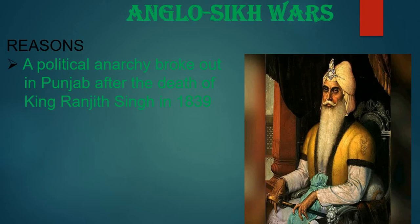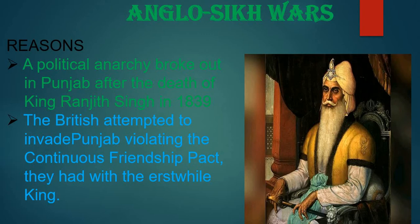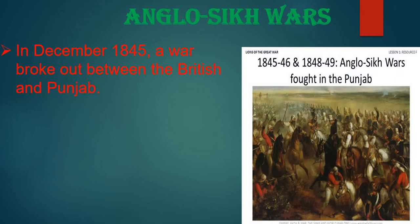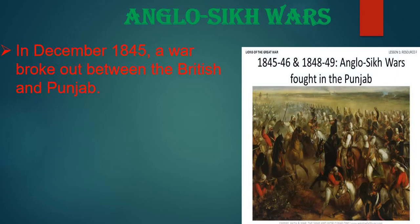The first reason behind the Anglo-Sikh Wars is that political anarchy broke out in Punjab after the death of King Ranjit Singh in 1839. When Ranjit Singh died, many people among his relatives started claiming the throne, causing political instability. The second reason is that the British attempted to invade Punjab, violating their continuous friendship pact. In December 1845, a war actually broke out between the British and Punjab.